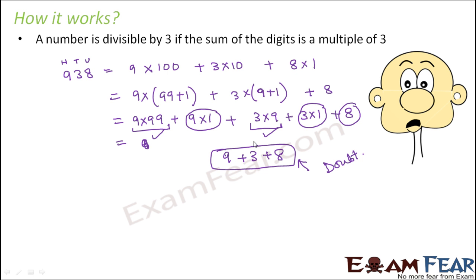You might say that 9 × 1 is also divisible by 3 because the digit happens to be 9. But if instead of 9 you had 6, then 6 × 1 — you would not know immediately if it is divisible by 3 or not. So the sum of these digits is the part we are uncertain about. Therefore, we check if the sum of the digits is divisible by 3; the rest of the terms will always be divisible by 3.